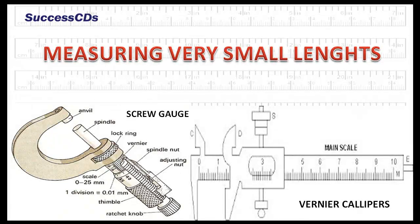Very small lengths is measured with the help of special instruments, like screw gauge and vernier calipers.